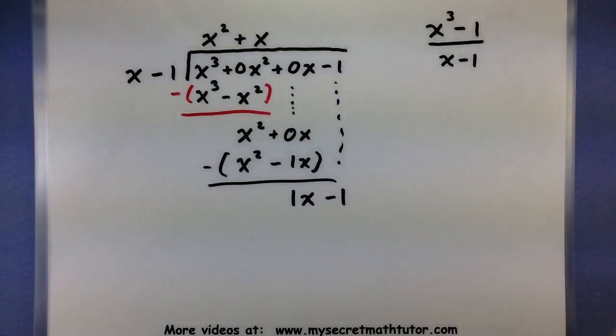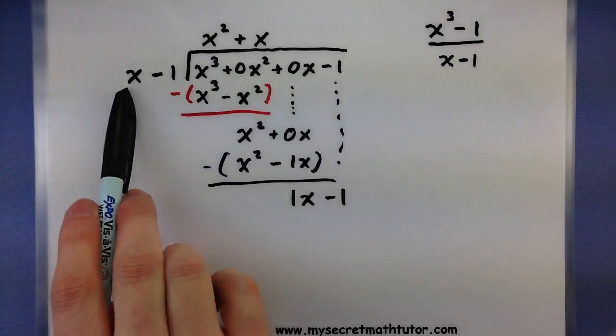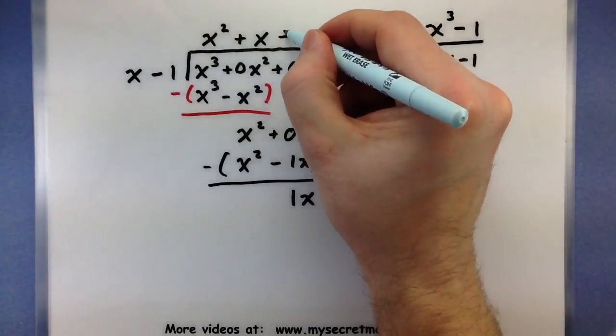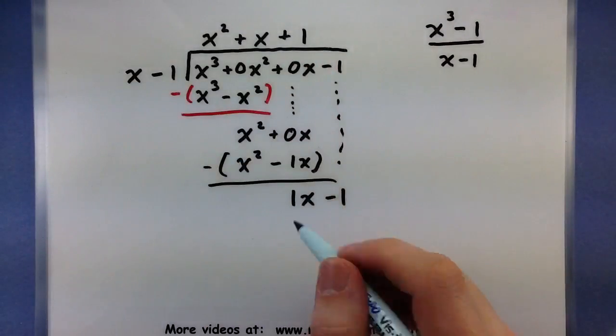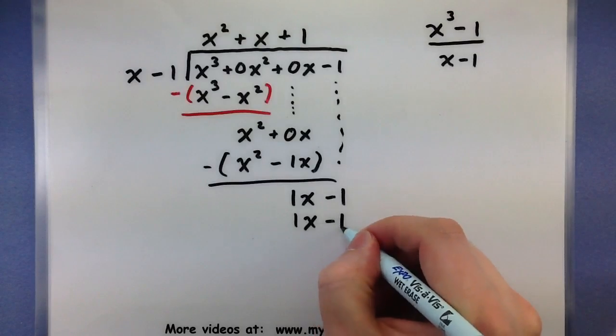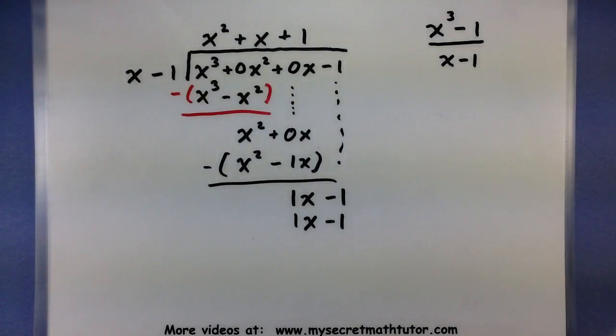Looks good. Do this one more time. x times what would give me a 1x? A 1. So 1 times x, 1x. 1 times a -1, -1. And now we subtract it away.